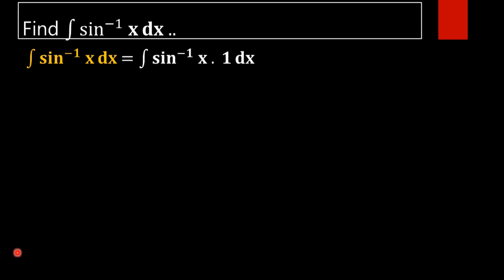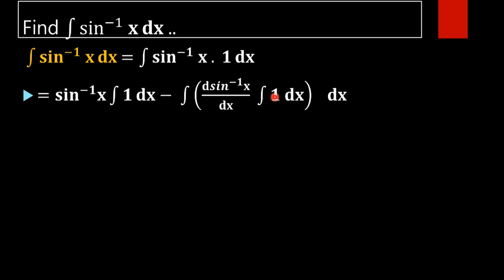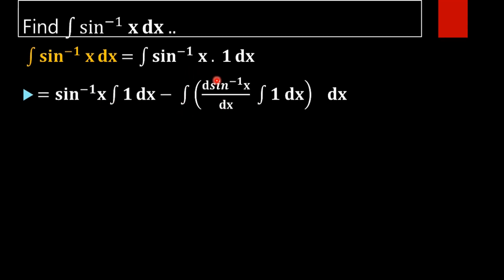On applying integration by parts, we will get sin inverse x into integral of 1 dx, minus the whole integral of d by dx of sin inverse x into integral of 1 dx, dx. That is u into integral of v, minus integral of derivative of u into integral of v dx. This is the method of integration by parts.